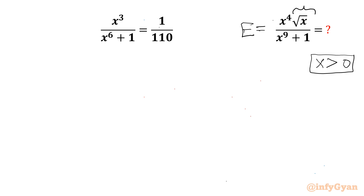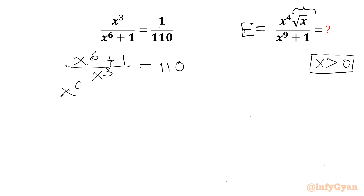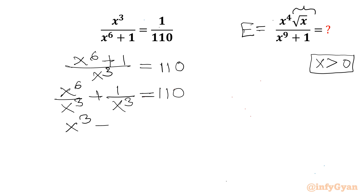Now I will flip our numerator and denominator — let us consider the reciprocal. So I will be writing x⁶ plus 1 over x³, and the reciprocal of the other side gives us 110. Let us split: I will write x⁶ over x³ plus 1 over x³, which equals 110. Or I can write x³ plus 1 over x³, and this will be equal to 110.